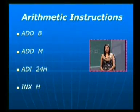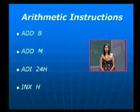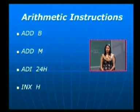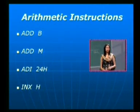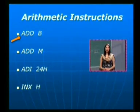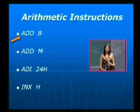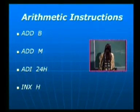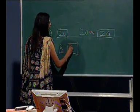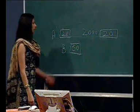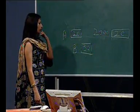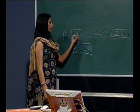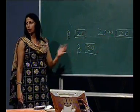Next are arithmetic instructions. Through arithmetic instructions we can perform arithmetic operations: addition, subtraction, multiplication, and division. A few instructions are: ADD B. In this case, a single operand is specified in the instruction, and the other operand is implicitly taken as the accumulator. For example, for ADD B, if the contents of register B are 30 and the contents of register A are 20, after the execution of this instruction, 30 plus 20, the contents of the accumulator will be 50.